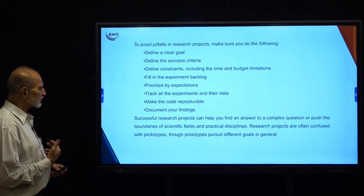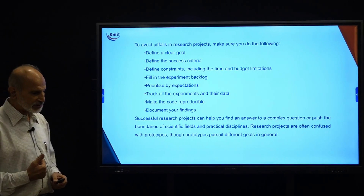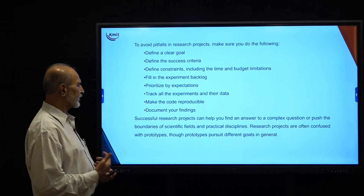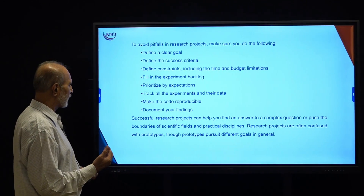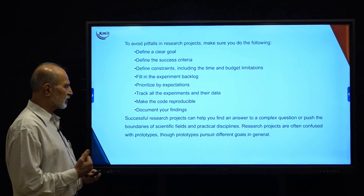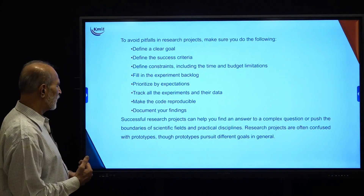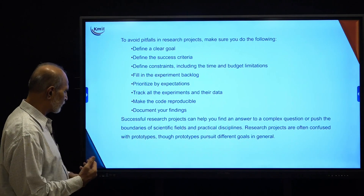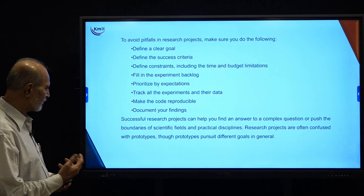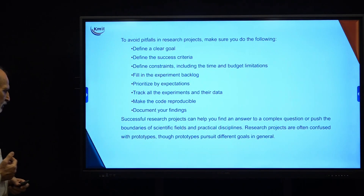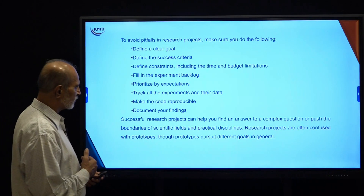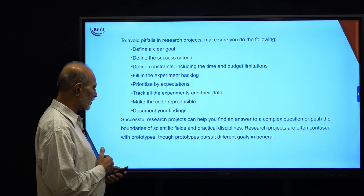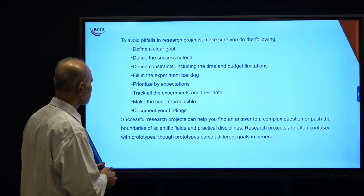Around six to seven points clearly indicate that our goals are well defined, our criteria are well defined, we are within budget, and we are doing experiments on a reproducible basis. A successful research project can help you find out the answer to a complex problem or push the boundary of scientific research to a practical discipline.